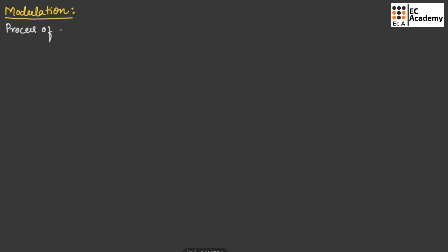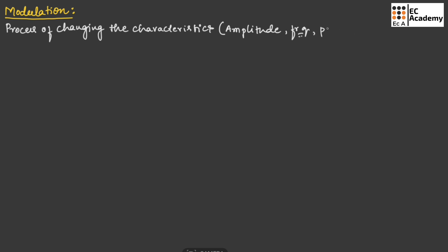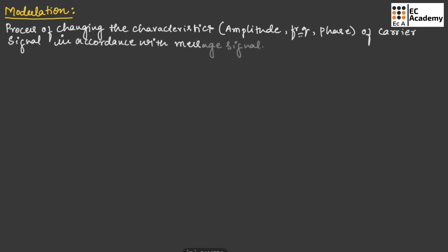Modulation is a process of changing the characteristics — like amplitude, frequency, or phase — of a carrier signal in accordance with the message signal. If we consider any signal, it will have three important characteristics: amplitude, frequency, and phase. If we change any one of these parameters of the carrier signal with respect to the message signal, the process is known as modulation.